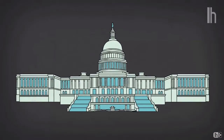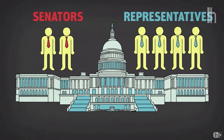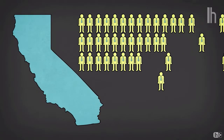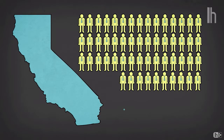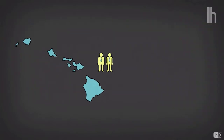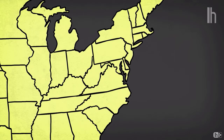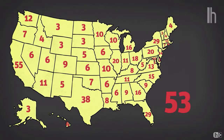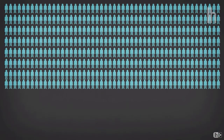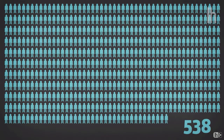Each state has electors in the college equal to the number of members it has in Congress. Every state has two senators and a delegation in the House based on its population. California, the largest state, has 53 representatives plus two senators, giving it 55 electors. Hawaii has two representatives and two senators, giving it four electors. Washington D.C. also gets three electors, for a grand total of 538 possible electoral votes.